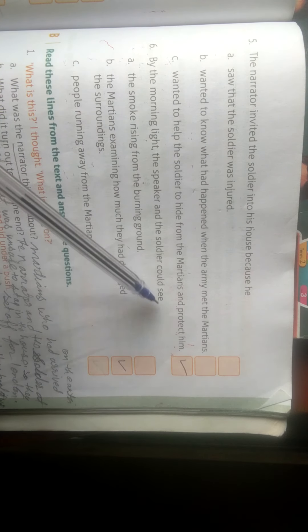Okay, we have completed Exercise A. Please read this. Watch the video carefully and do this exercise in your fair notebook. You have to do it in fair notebook, only right answer. For example, six, by the morning light the speaker and the soldier could see, then you just write the answer, the Martians examining how much they had damaged the surroundings. You have to complete one sentence. Do all this in the same way. Thank you. Have a nice day.